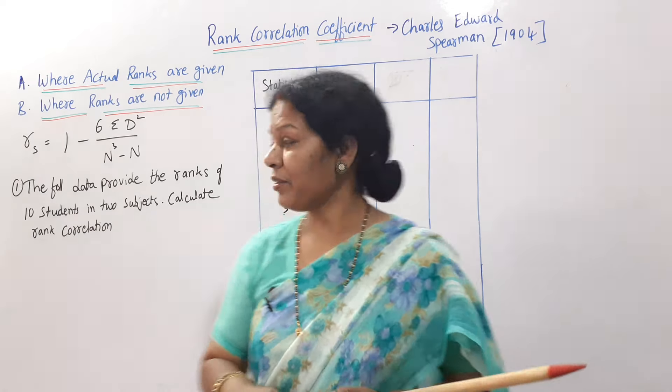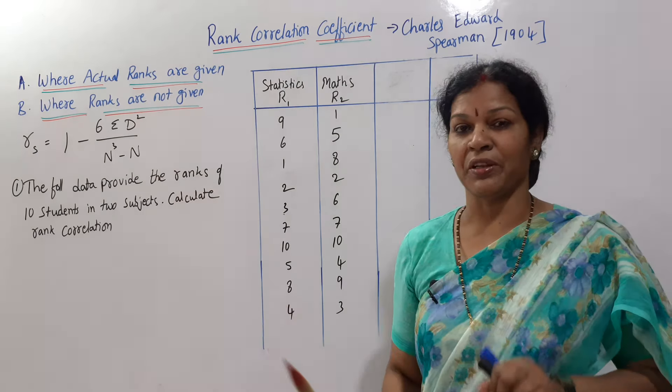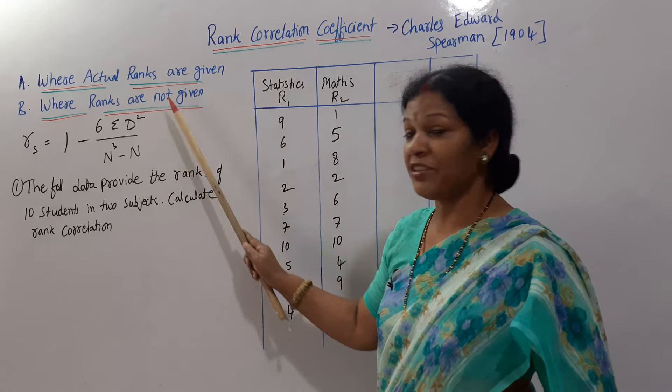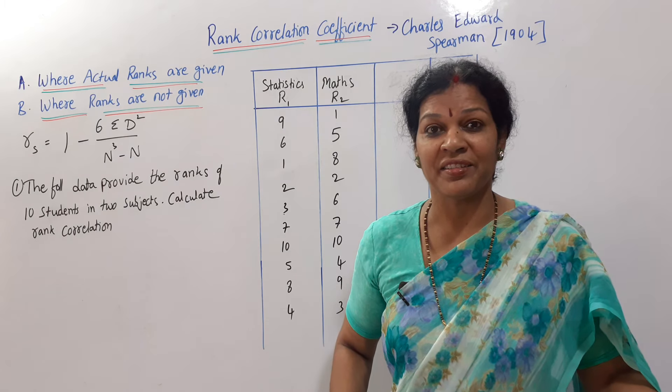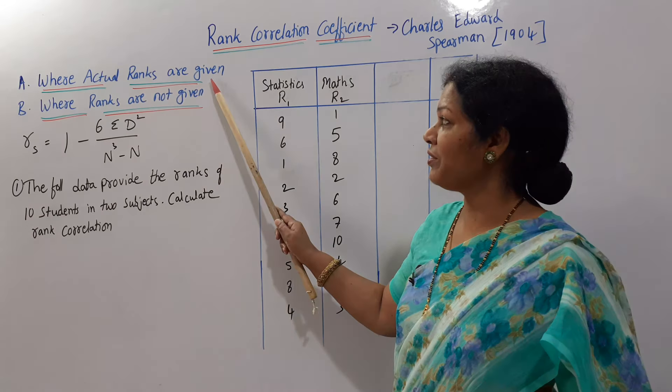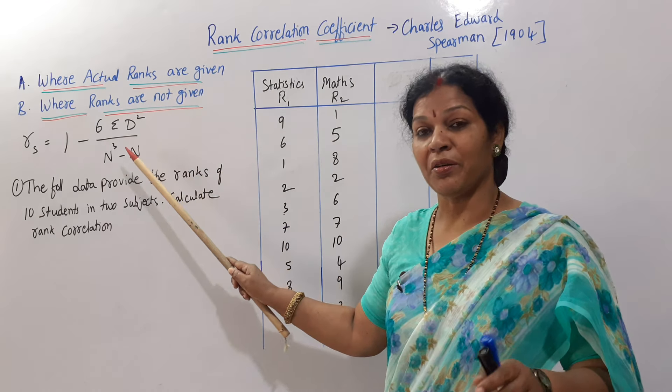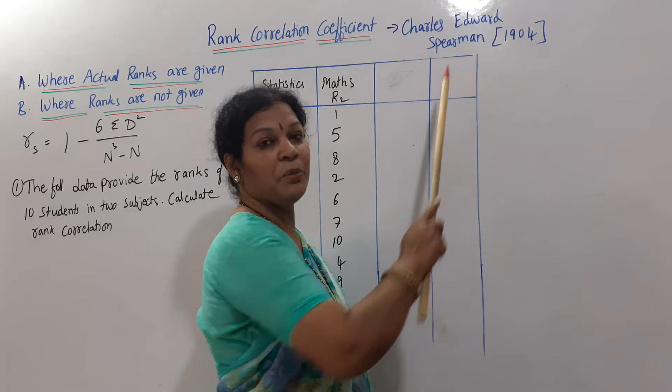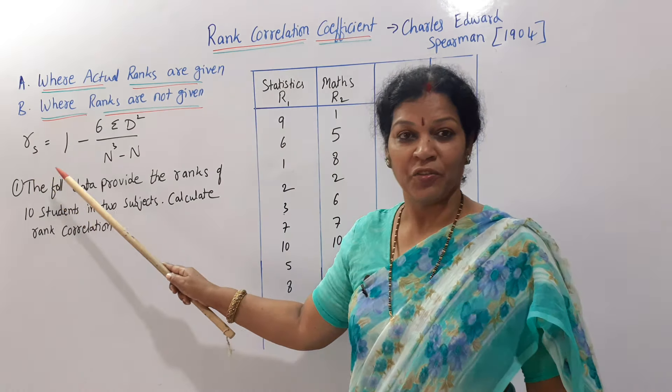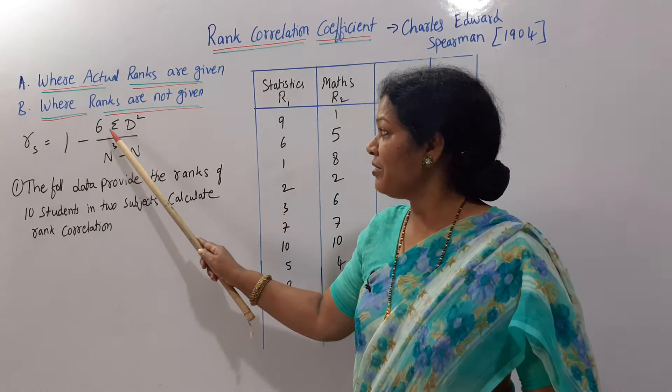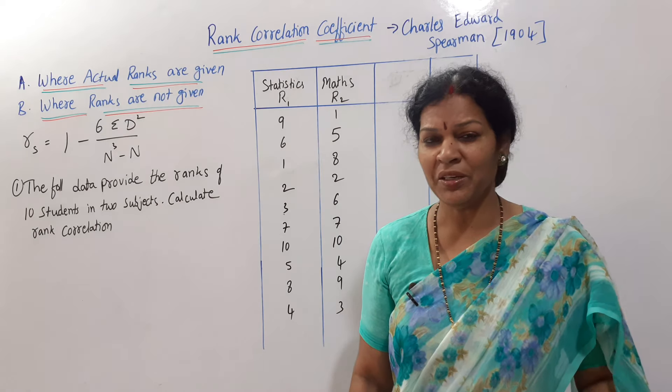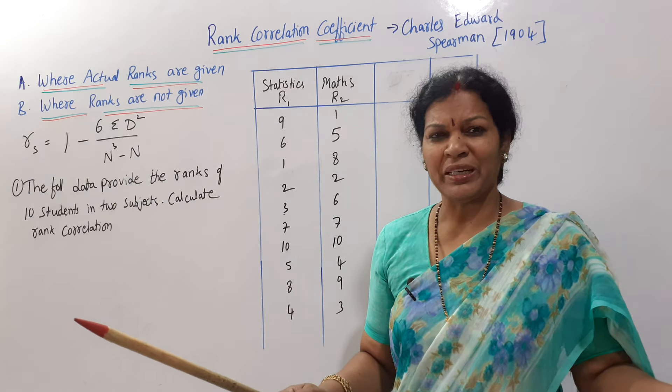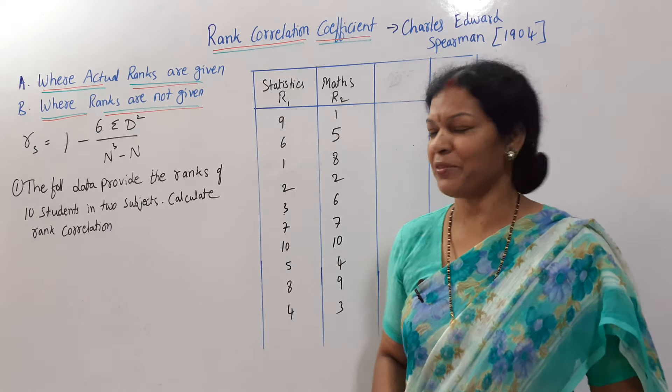So how do we calculate this rank correlation? Two methods are there. One is where actual ranks are given—ranks are given directly, so you can go for the calculation. Second method is where ranks are not given—we have to give the ranks, then go for the calculation. Anyway, today we will focus on whether ranks are given or not given, does not matter—formula is the same. Rs, r means rank correlation, s means Spearman. Rs, Spearman's rank correlation formula is very easy: 1 minus 6 sigma D square by n cube minus n. Say along with me: 1 minus 6 sigma D square by n cube minus n. Simple, easily able to remember, and calculation is also quite easy. Just focus five minutes, you will understand everything.